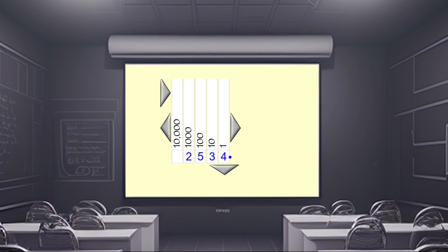If I put another digit here, we can see that this number is seventy two thousand five hundred and thirty four. The seven represents seven ten thousands, or seventy thousand. So we have seventy thousand and two thousand, five hundred, thirty tens, and four ones. Add them together and we get seventy two thousand five hundred and thirty four.